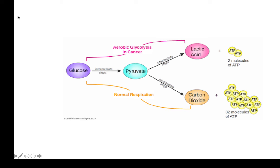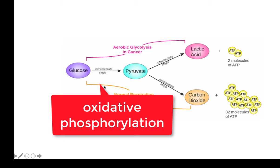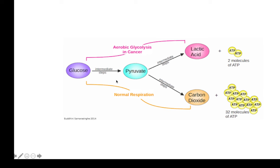What is reprogramming of metabolism? In normal cells, how do we produce energy? If we have enough oxygen, we use oxidative phosphorylation — normal respiration. In this process, glucose is converted to carbon dioxide, and we get 36 moles of ATP per mole of glucose.